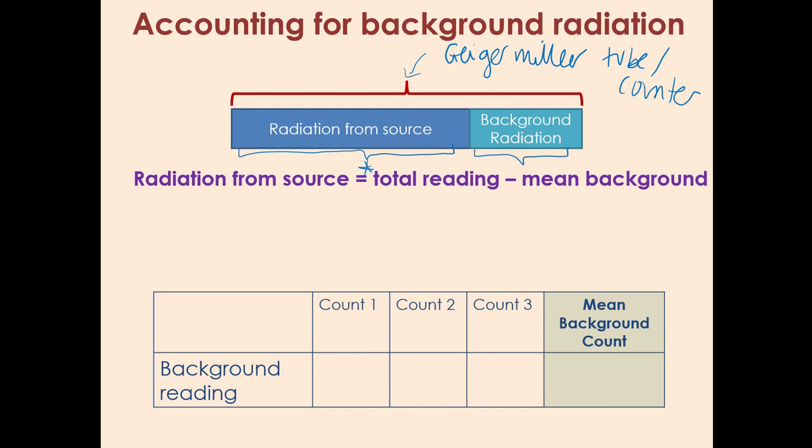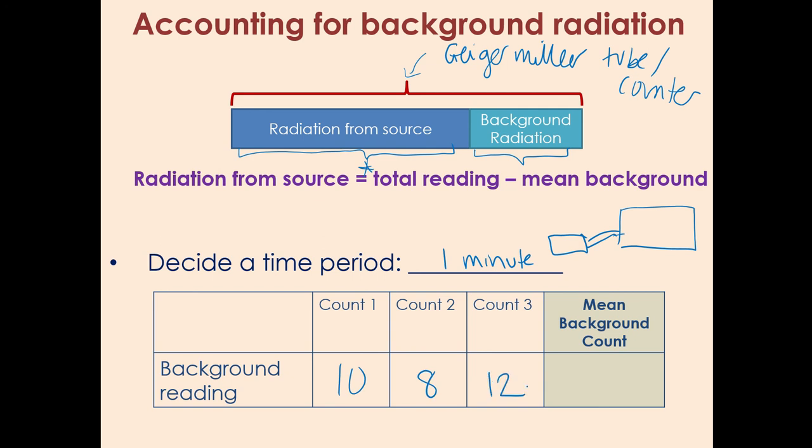The radiation from the source is going to be the total reading minus the mean background reading. When it comes to taking the background reading, you don't even take the source out of the box. All you do is you have your detector, you have your Geiger-Muller tube, and you just turn it on. What you would do is pick a time period, let's say our time period is going to be one minute. All we would do is leave the Geiger-Muller tube on for one minute and see what reading it shows at the end. Let's imagine it gives me 10, then reset it, do the same thing again. Let's say we get 8, then we do it again, let's say 12, giving us a background count rate of 10 counts per minute. So what we would then have to do is once we get the source out and take the readings, we're going to need to take away 10 to get the amount that's just from the source itself.